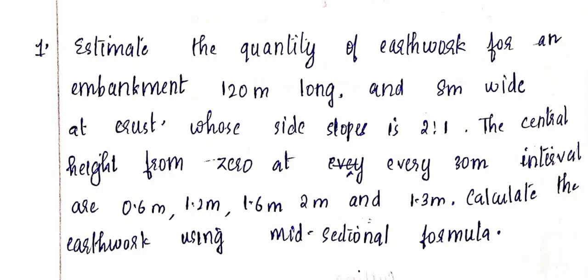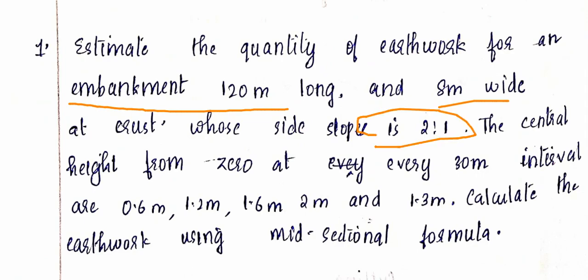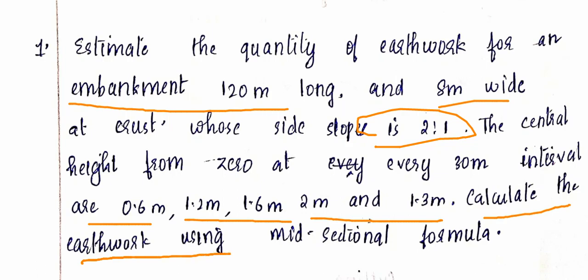Problem: Estimate the quantity of earthwork for an embankment 120 meters long and 8 meters wide at crust, whose side slope is 2:1. The central heights at every 30-meter interval are 0.6, 1.2, 1.6, 2.0, and 1.3 meters. Calculate the earthwork using the Mean Sectional Area Method.